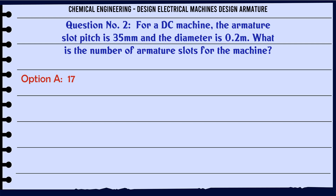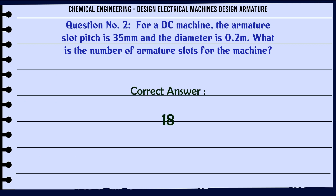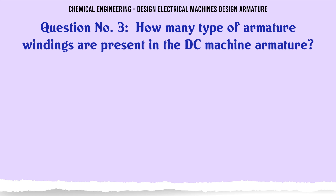For a DC machine, the armature slot pitch is 35 mm and the diameter is 0.2 m. What is the number of armature slots for the machine? Options: a) 17, b) 18, c) 19, d) 20. The correct answer is 18.